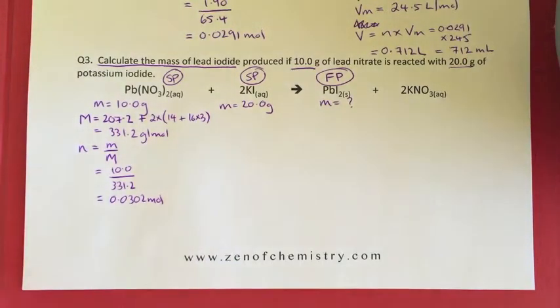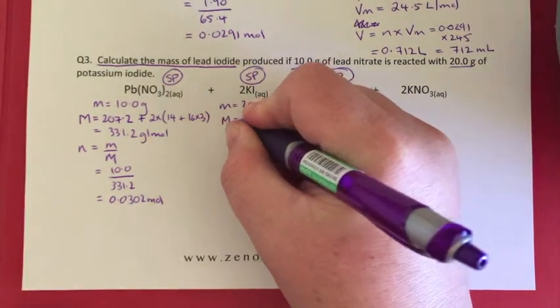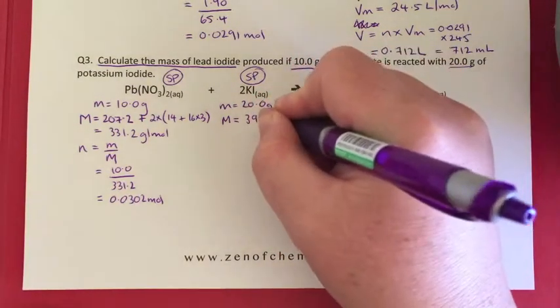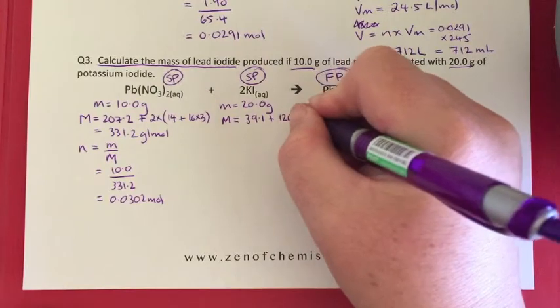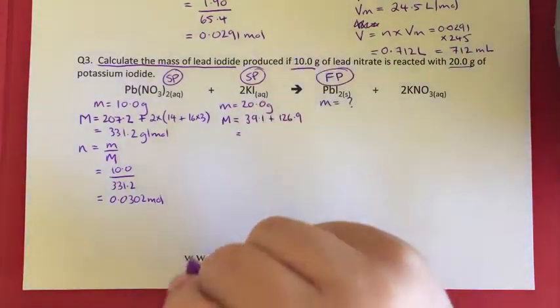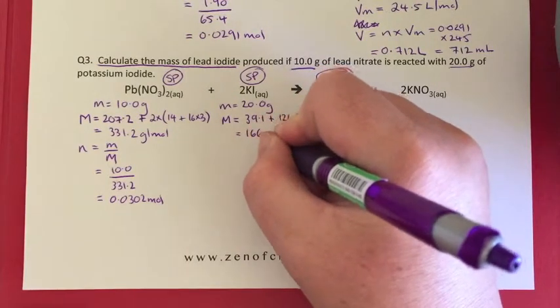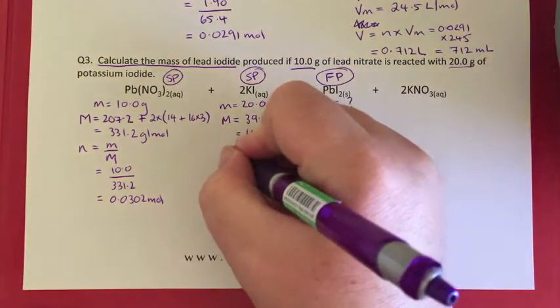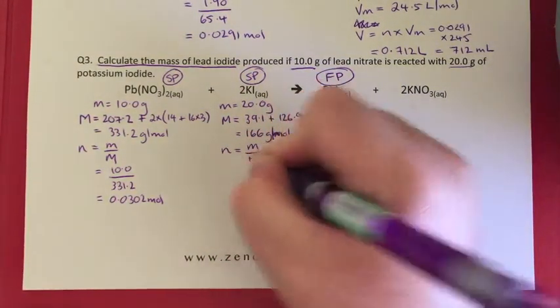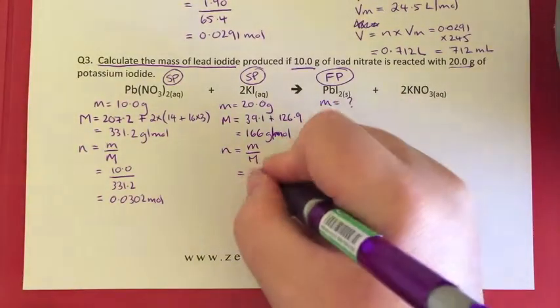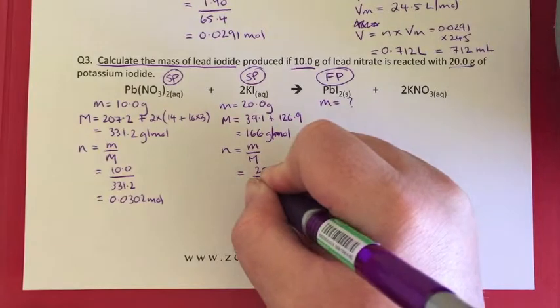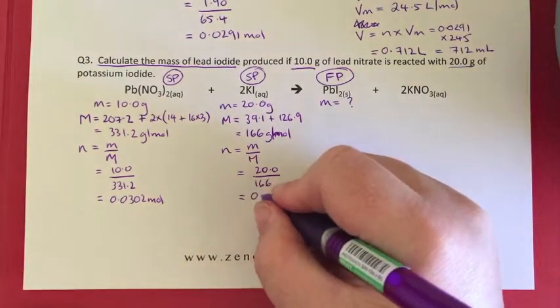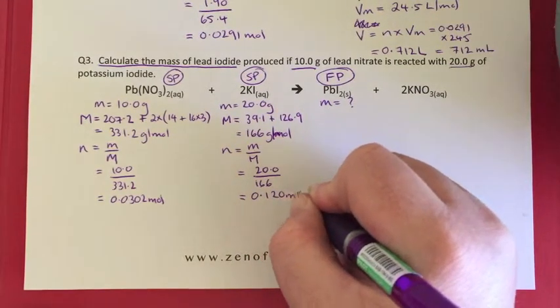Let's have a look at the number of moles of potassium iodide. Our molar mass, potassium is going to be 39.1 and our iodine is going to be 126.9, so if we add those together we get 166 grams per mole. Number of moles equals mass divided by molar mass, so we've got 20.0 divided by 166. Throw that in the calculator and we get 0.120 mole.